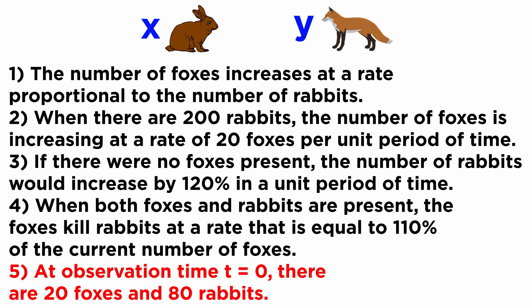And fifth, at observation time t equals 0, there are 20 foxes and 80 rabbits. Suppose we want to develop a mathematical model for the populations of the foxes and rabbits.